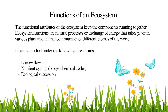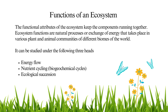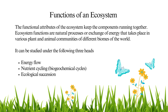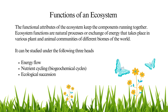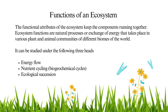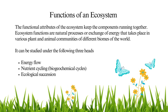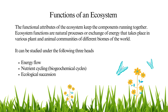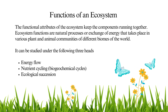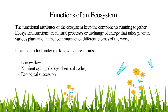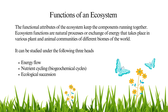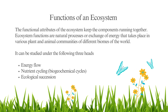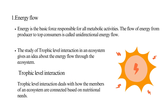The functional attributes of the ecosystem keep the components running together. Ecosystem functions are natural processes or exchange of energy that takes place in various plant and animal communities of different biomes of the world. It can be studied under the following three heads: energy flow, nutrients cycling, and ecological succession.